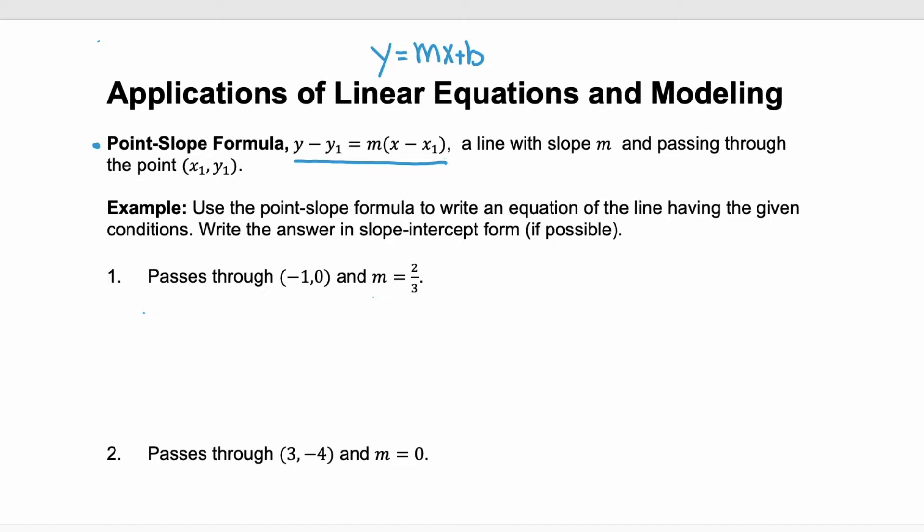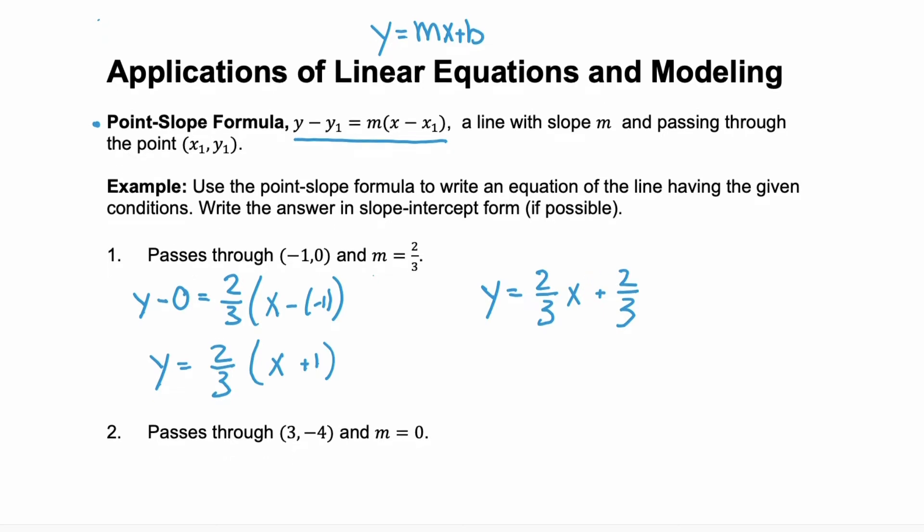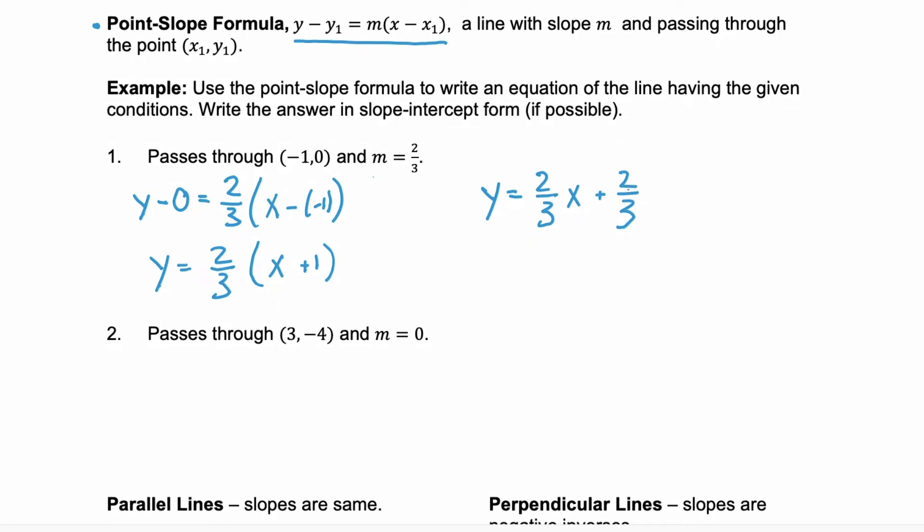This first line passes through negative 1, 0 which is an x-intercept and has a slope of two-thirds. Using point-slope formula we have y minus the y-coordinate 0 equals the slope of two-thirds times x minus the x-coordinate negative 1. Now we simplify: y equals two-thirds times x minus negative 1 is plus 1 and we'll distribute the two-thirds through the parentheses to get y equals two-thirds x plus two-thirds. And notice that this is simplified into slope-intercept form already. So the slope is two-thirds still and the intercept, the y-intercept, is two-thirds.